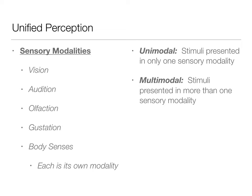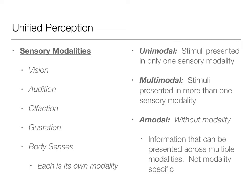Amodal information is information that's not specific to an individual modality. You can convey it across different sensory modalities. If you can lipread, you can get speech information auditorily through audition, unimodally through vision, or multimodally through both audition and vision. That means speech is amodal information for you. Things like tempo and rhythm can also be presented across many different modalities — they're not specific to one.